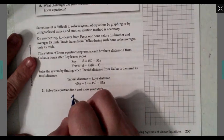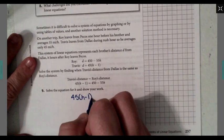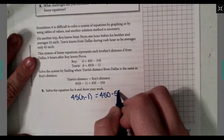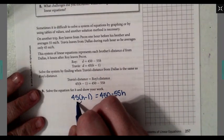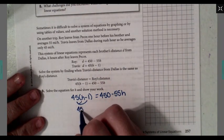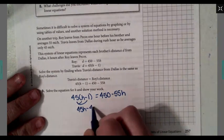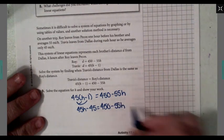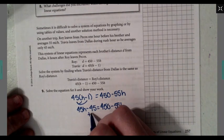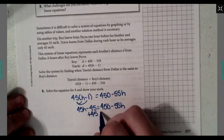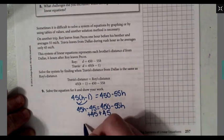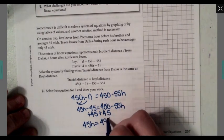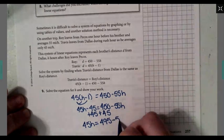So we've got 45h minus 1 equals 450 minus 55h. I'm going to use the distributive property. So it's going to give me 45h minus 45 equals 450 minus 55h. Now I'm going to add 45 to both sides. It gives me 45h minus 55h.